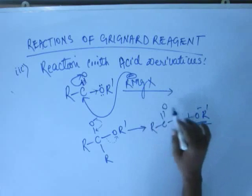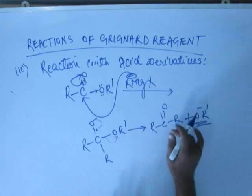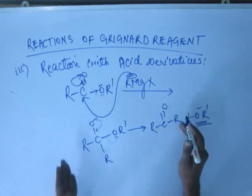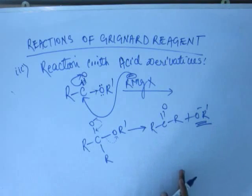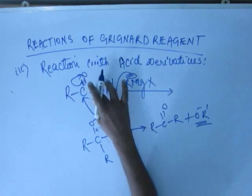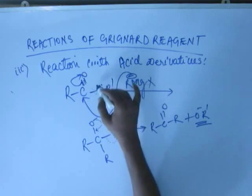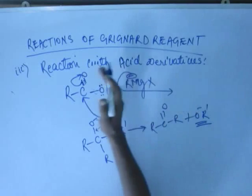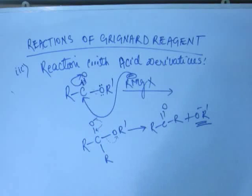So we again have a ketone generated, just as in the case of acyl chloride when chloride left. The mechanism is exactly the same as in the case of acyl chloride — the only difference is in reactivity. In acyl chloride, electrons were being removed from the bond; in the case of ester, electrons are being given by the plus M effect. So except for reactivity, the mechanism is the same.